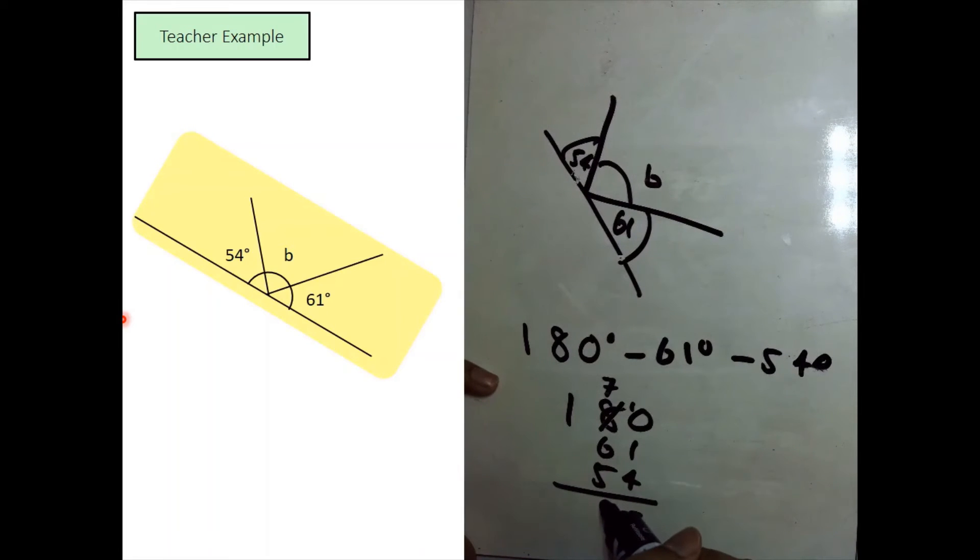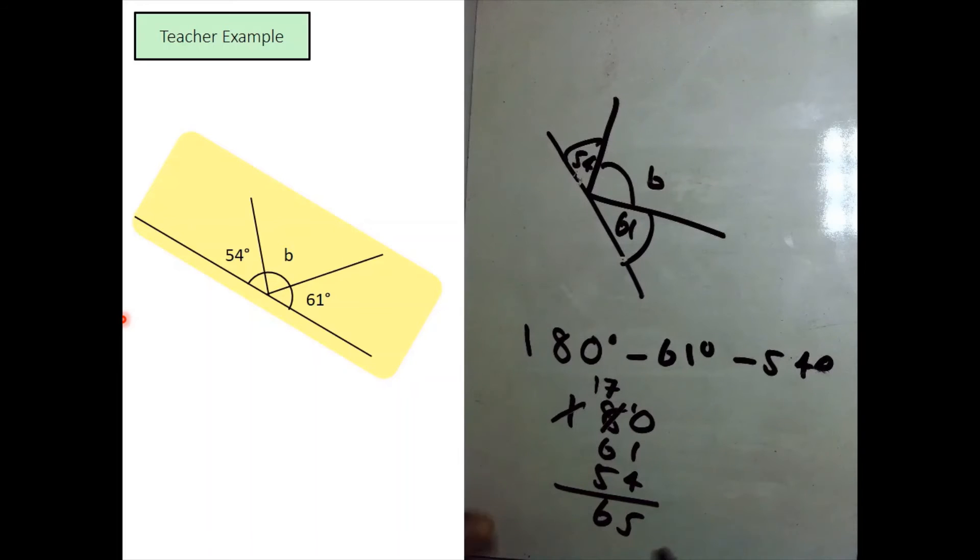1, take away 5. Okay, this is also something hard. So, we can borrow this 100 over here. Pop it there. Now, there's no 100s left, by the way. 17, take away 6 is 11. 11, take away 5 is 6. So, our final answer over here will be 65 degrees.